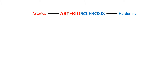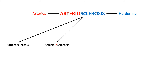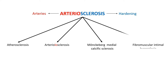There are various types of arteriosclerosis. Atherosclerosis is the hardening of the arteries due to the formation of atheromatous plaque. Arteriolosclerosis is the hardening of the arterioles or small arteries — note the extra 'LO' in the spelling. Next is Mönckeberg medial calcific sclerosis, in which there is calcification in the tunica media. Lastly, fibromuscular intimal hyperplasia involves hyperplasia of the intimal layer.